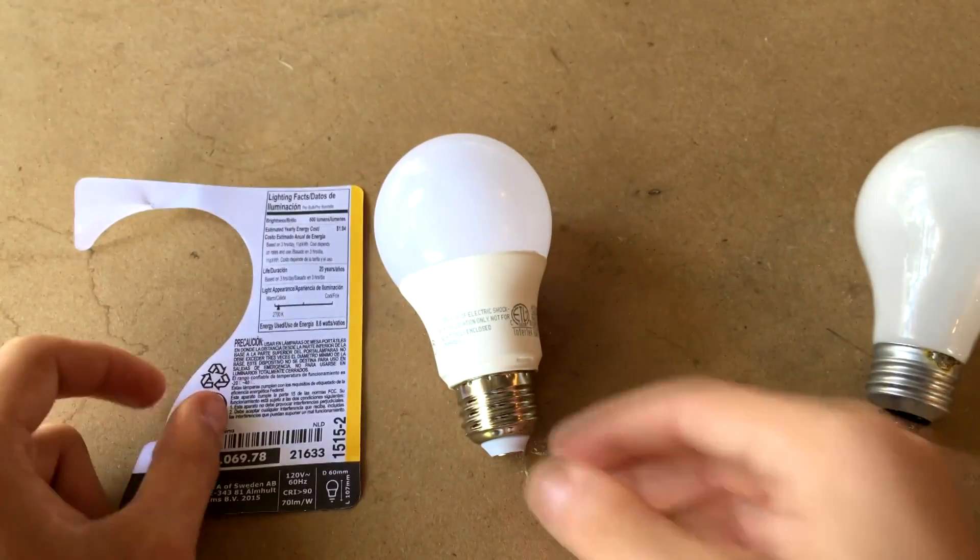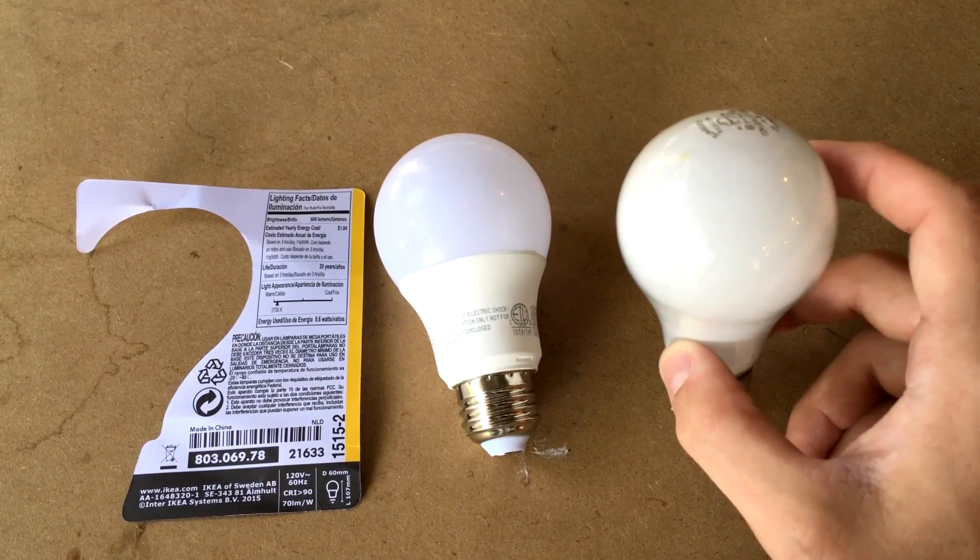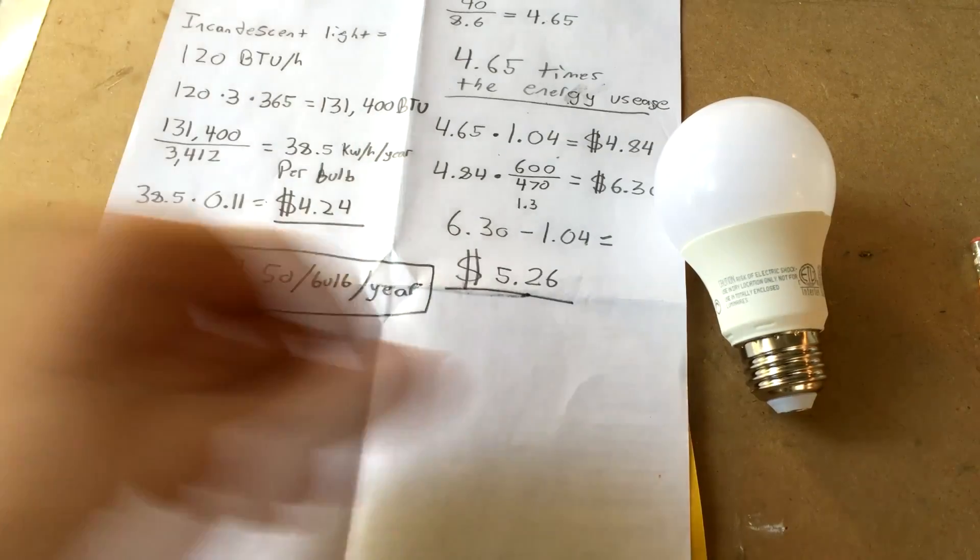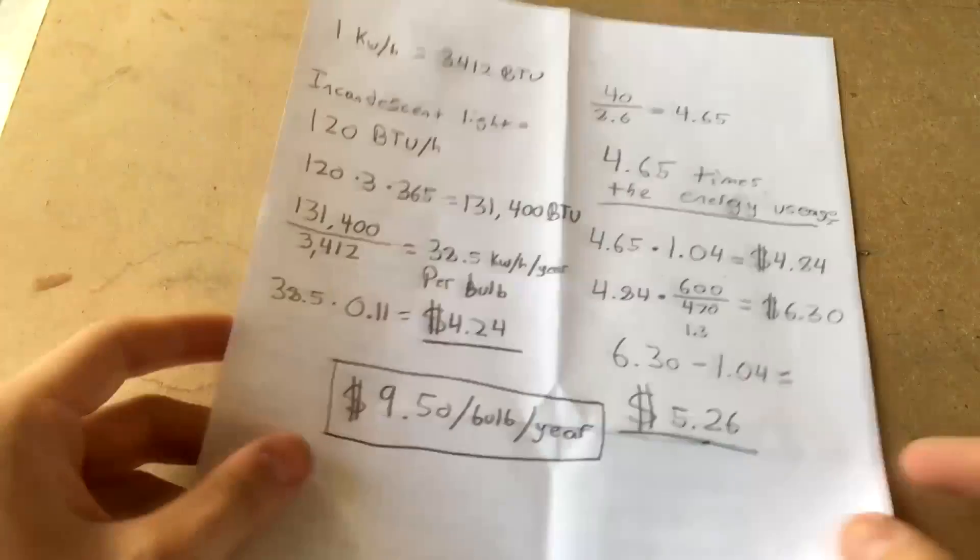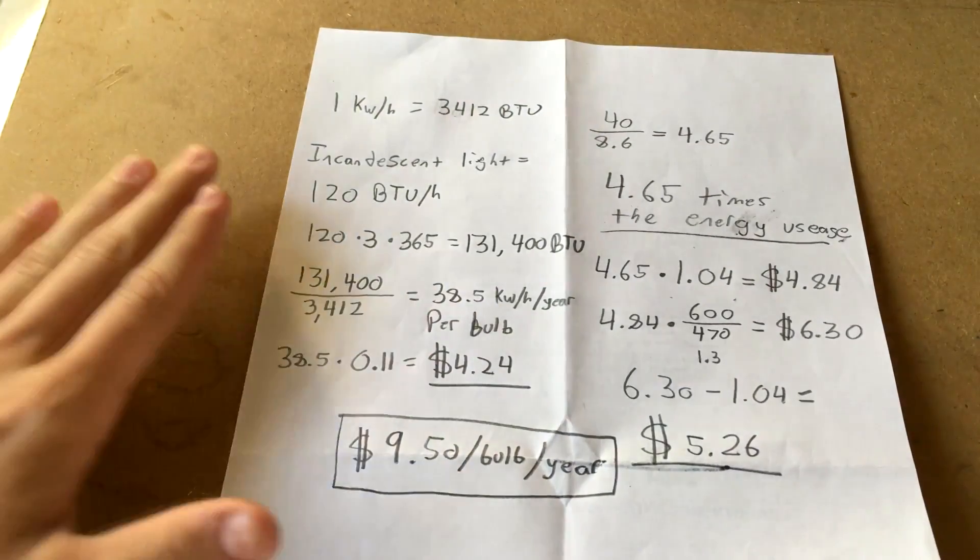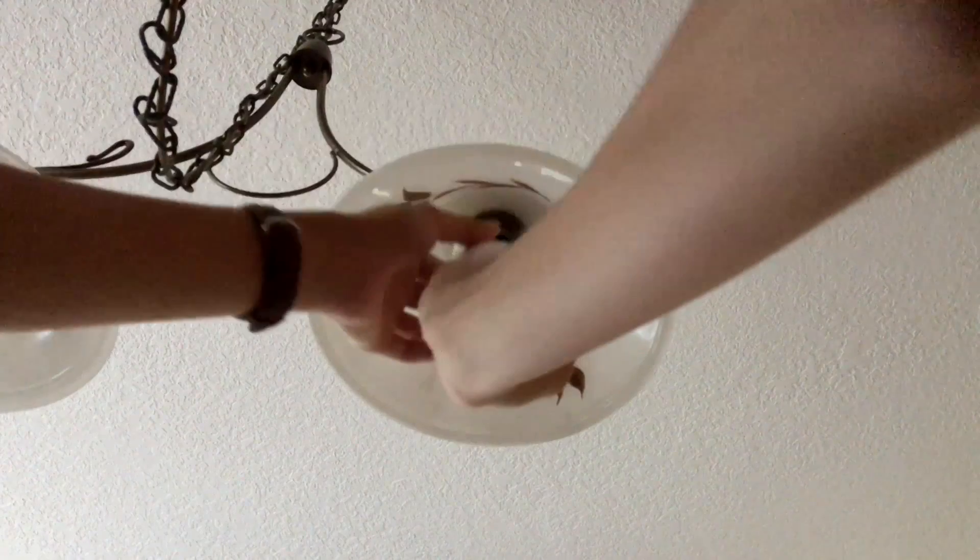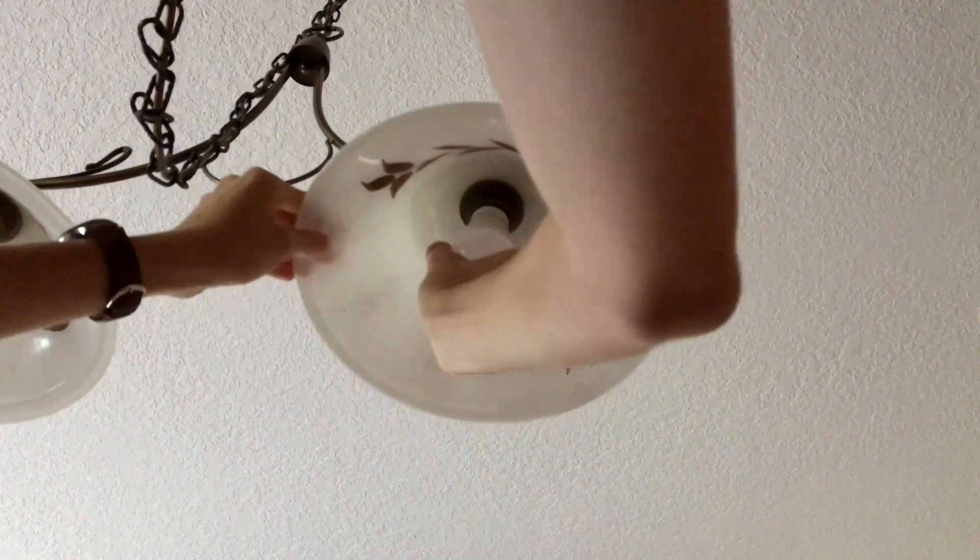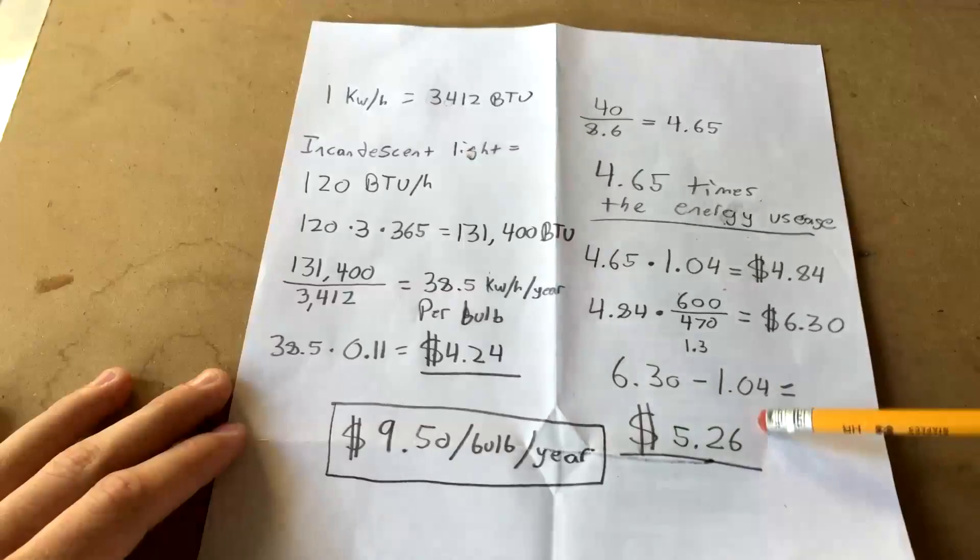If we do the math and figure out that this light bulb uses 40 watts of power, we can extrapolate all of the rest of the information. I know this channel is supposed to be for mere mortals, so I'm not going to go through all of the math because frankly it would probably bore you to death. But suffice it to say that an incandescent light bulb uses 4.65 times the energy that an LED light bulb uses, which comes out to a total of $5.26 extra per light bulb per year that you pay in electricity.